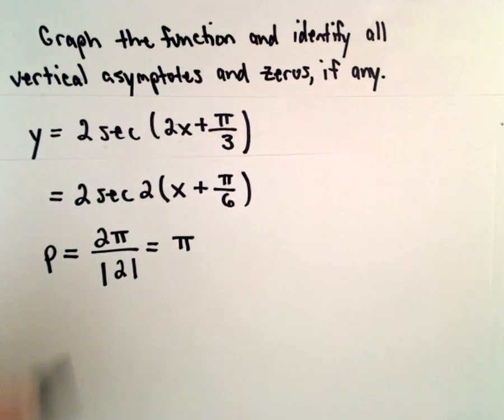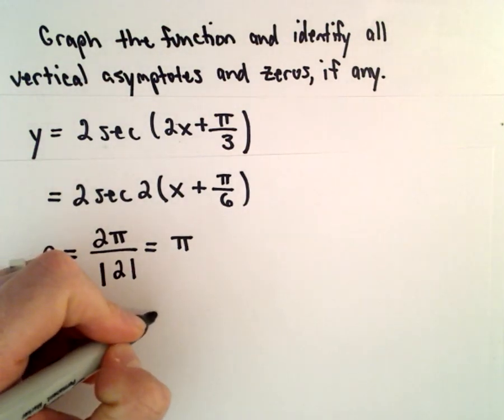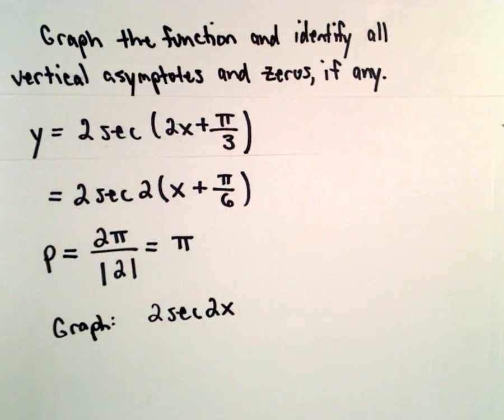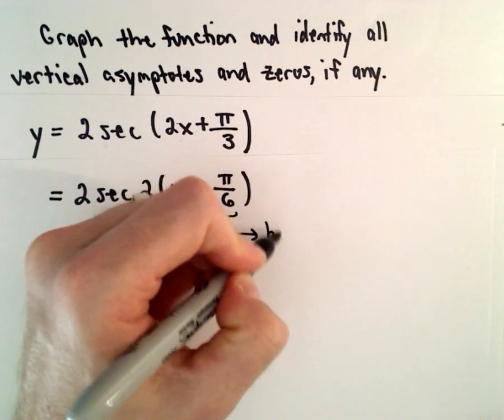And what I'm going to do is I'm going to graph the function 2 times secant of 2x. And then once we have that, I'm going to apply a horizontal shift.